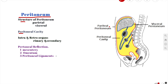Let's get started. Your peritoneum is actually the continuous membrane which lines your abdominal cavity and covers the abdominal organs, which are your abdominal viscera. It acts to support the viscera and provides pathways for blood vessels and lymph to travel to and from the viscera.